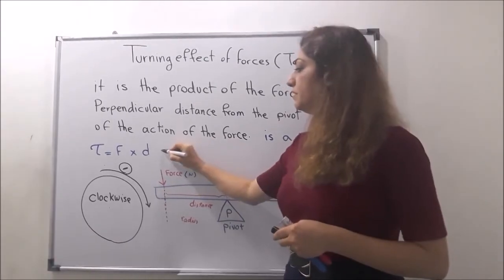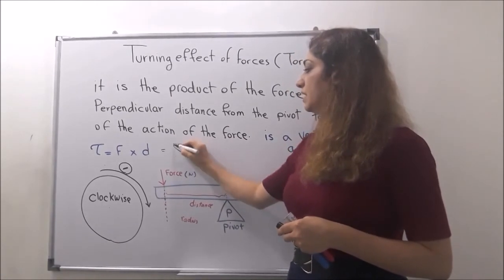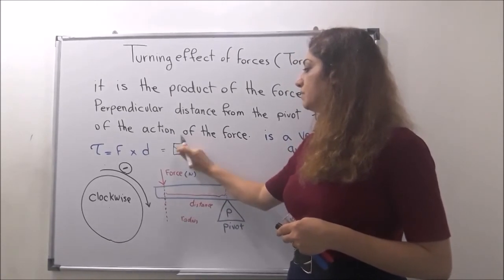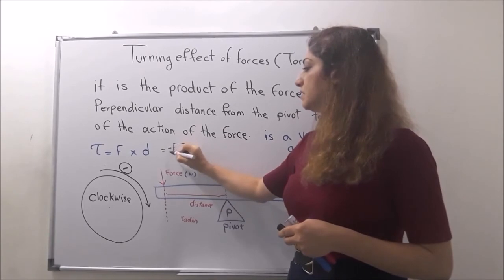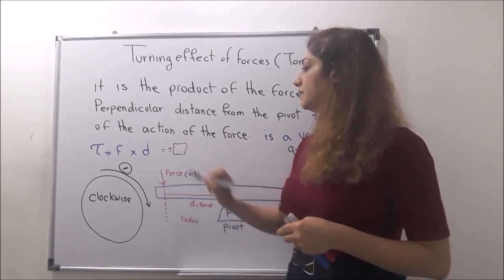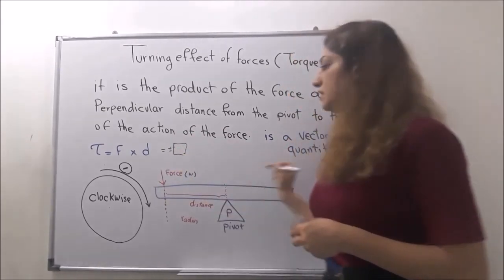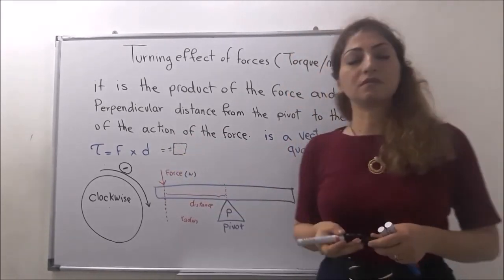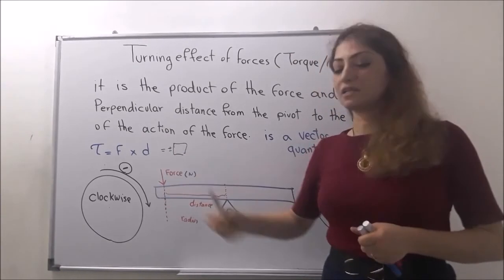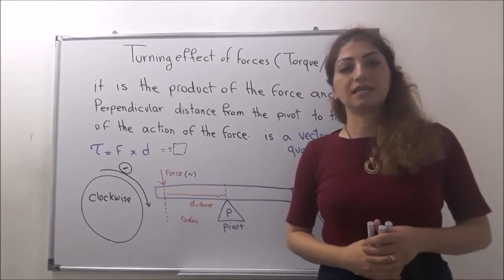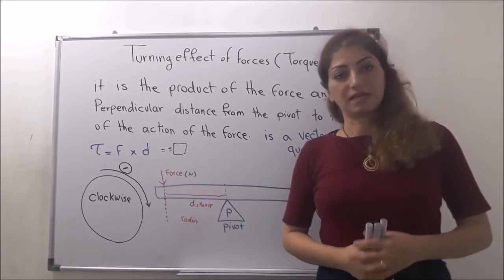Counter-clockwise rotation is shown with a positive sign in front of the value. For example, it could be 20 or any value, and you place a positive or negative sign. Positive indicates counter-clockwise direction, and negative indicates clockwise direction.